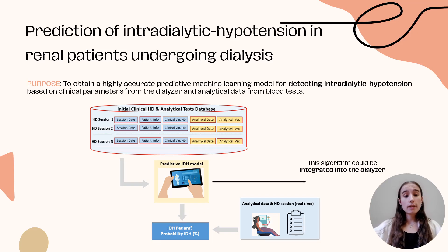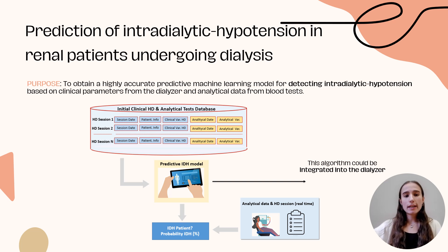Our study aims to develop a highly accurate predictive model using machine learning to detect IDH when the patient arrives for dialysis, based on clinical parameters from the dialyzer and data from blood tests. Our goal is to integrate the predictive algorithm directly into the dialyzer, allowing it to automatically adjust treatment protocols if a high risk of hypotension is detected, preventing complications in real time.